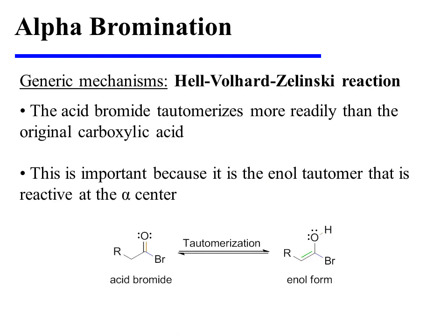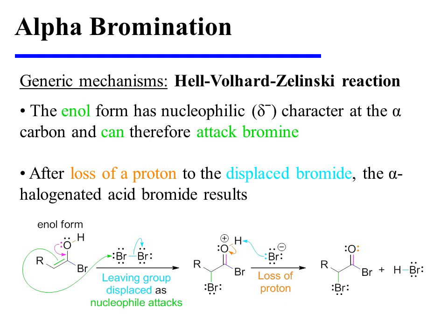The acid bromide tautomerizes more readily than the original carboxylic acid. This is important because, as seen earlier, it is the enol tautomer that is reactive at the alpha center. The enol form has nucleophilic character at the alpha carbon, so it can therefore attack bromine. During the process, bromide is displaced, and that displaced bromide will remove a proton from the oxonium ion so as to yield the alpha-halogenated acid bromide.